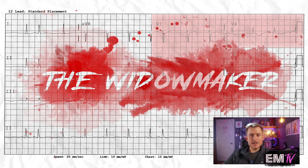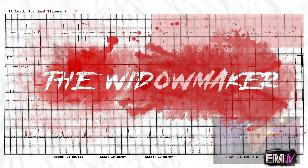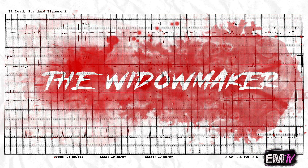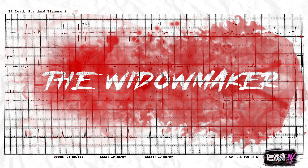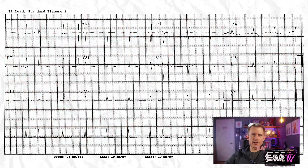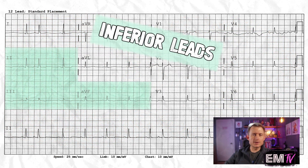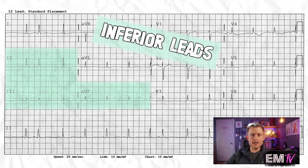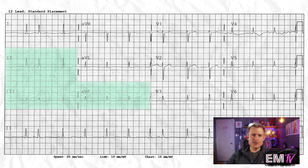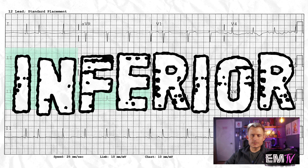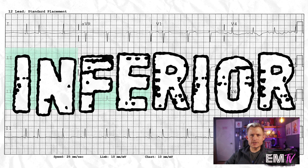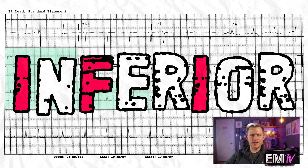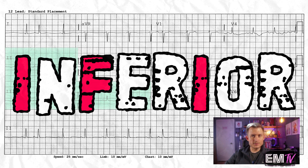Lay people sometimes refer to this as the Widowmaker. The next leads I look at are the inferior leads — leads 2, 3, and AVF. These clump nicely together on the bottom left of the EKG. A way I tell my students to remember this lead grouping is to look at the word 'inferior' — it contains multiple I's and an F, not a single I, but multiples.